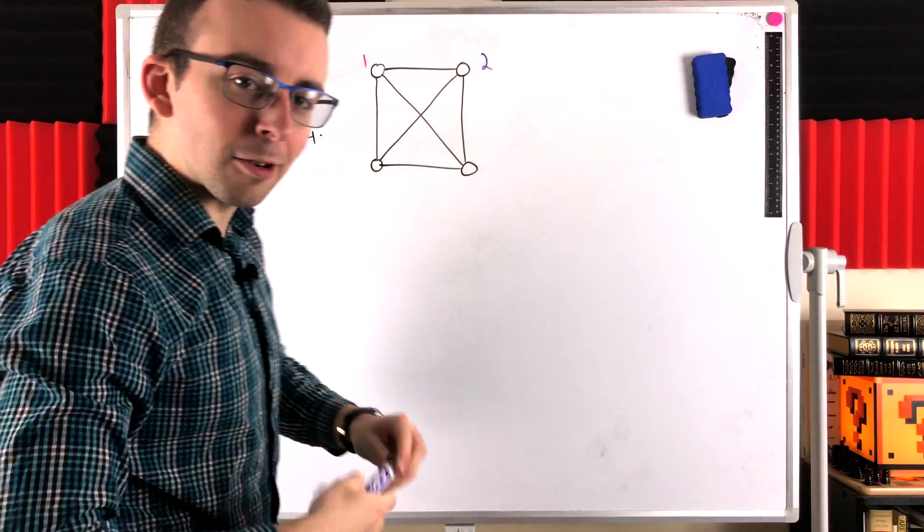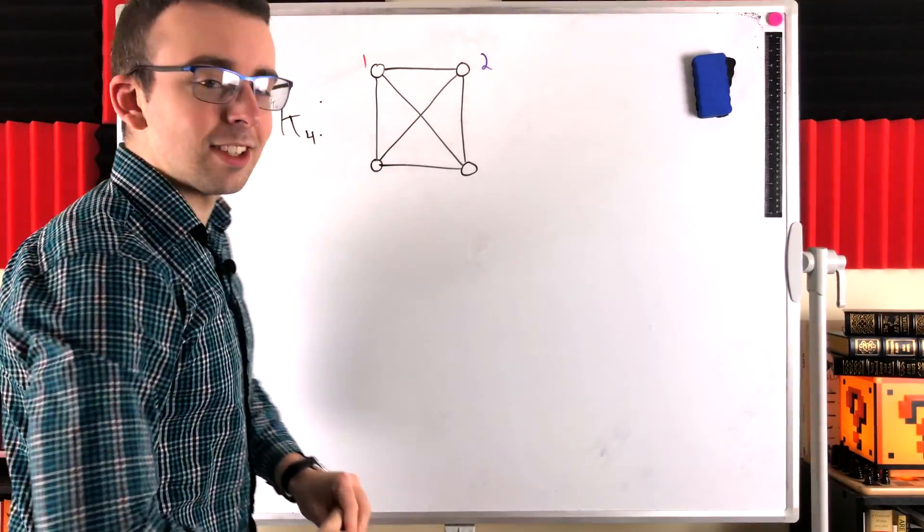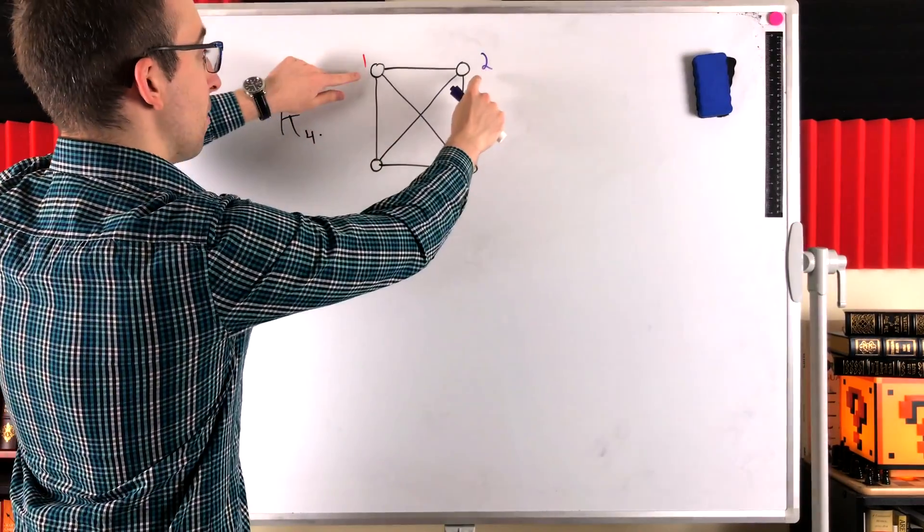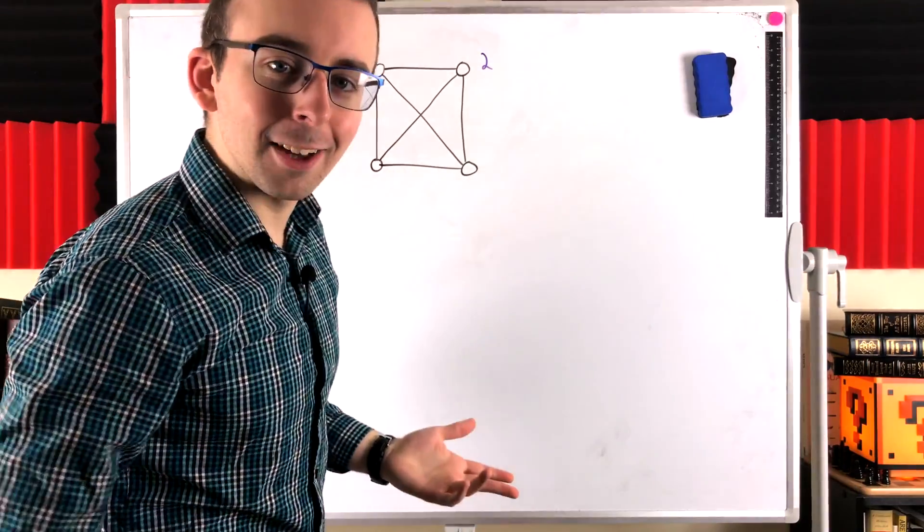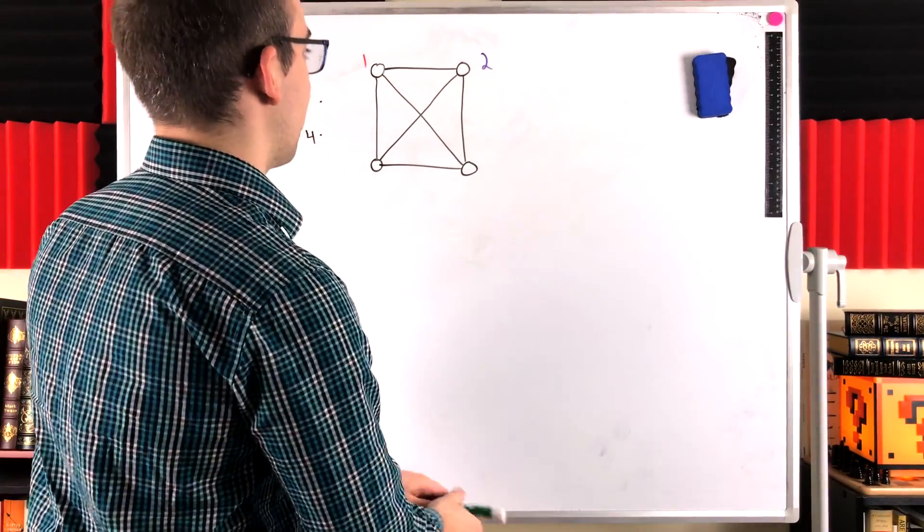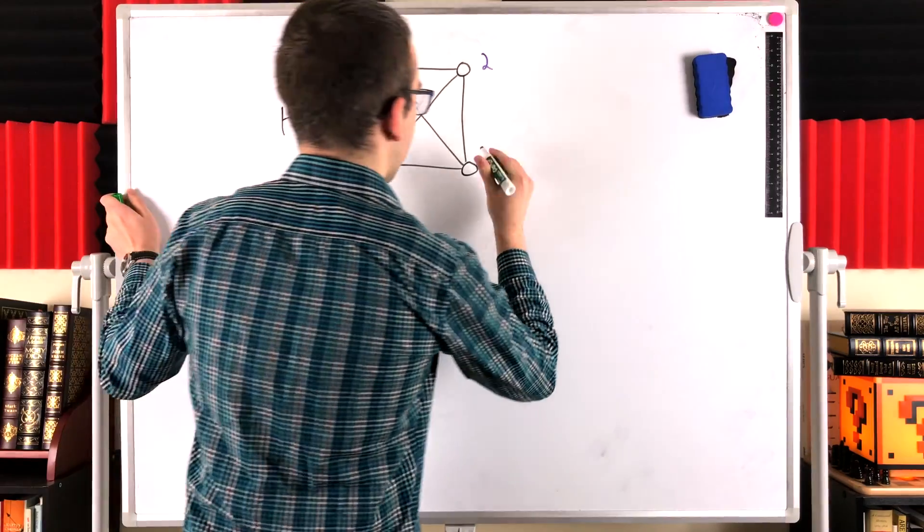Again, since this is a complete graph, we know that the other vertices have to be adjacent to both of the vertices that we've already colored. So again, we're going to need a new color for the next vertex, perhaps we color it three.